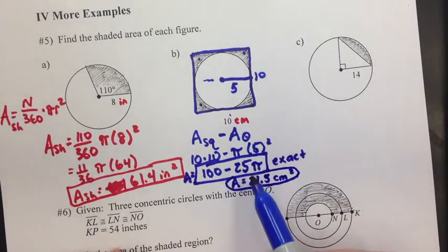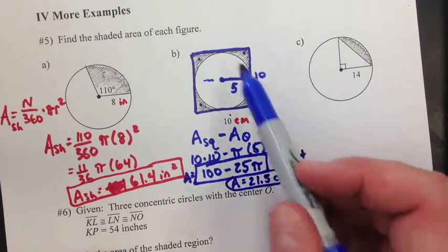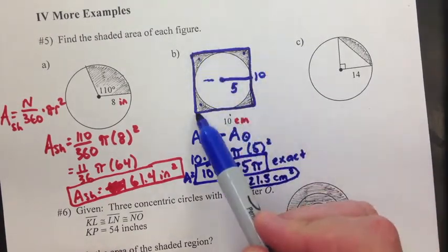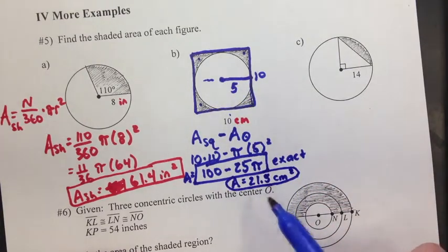Now if I want the shaded, I could do 100 minus 25 pi, and that gives me 21.5 centimeters squared. Both of these are good. This is the exact solution. This is the rounded solution. The strategy was, take the big figure, the square, subtract out the part I don't want, which is the circle. Whatever's left over is my answer.